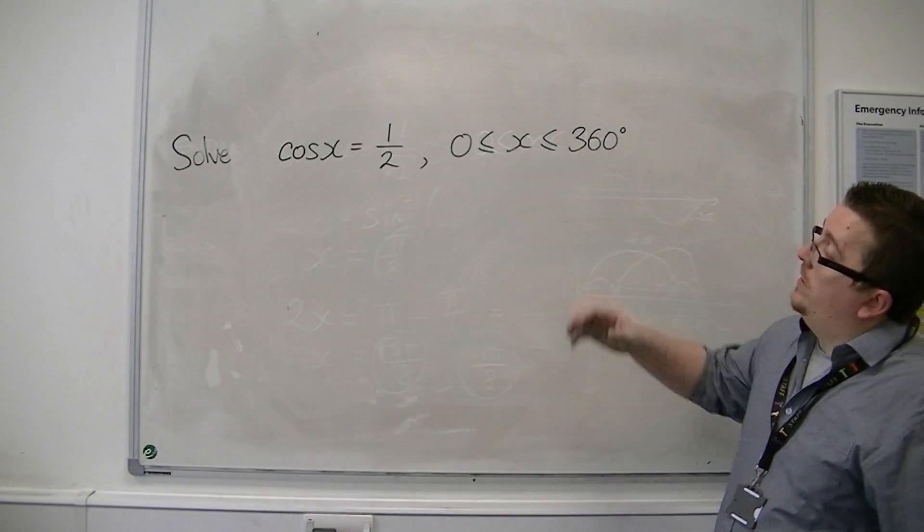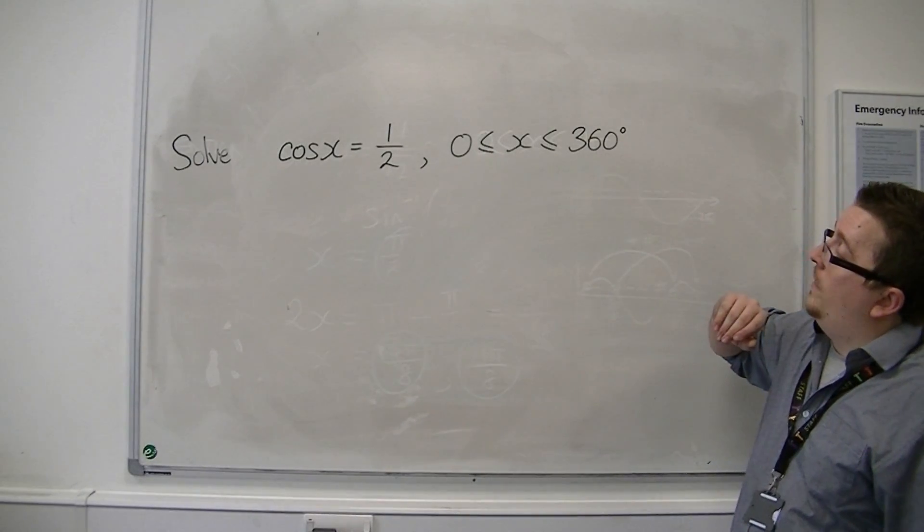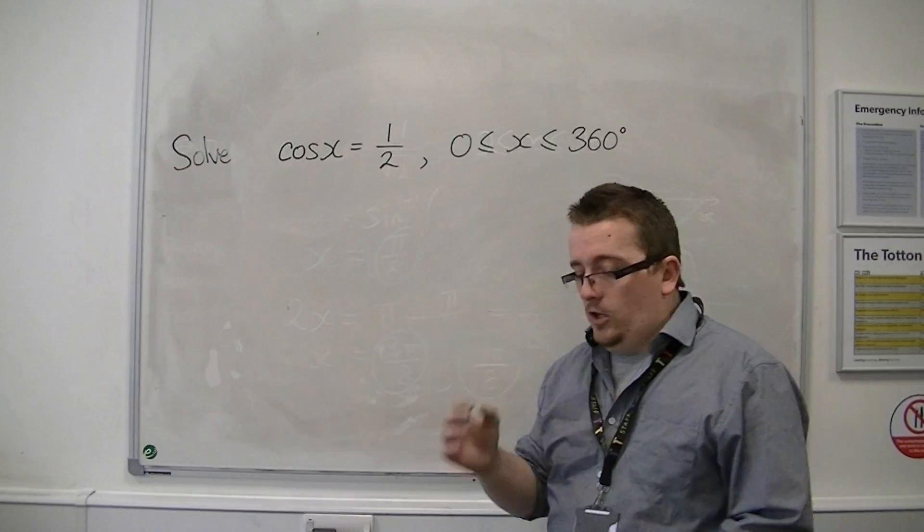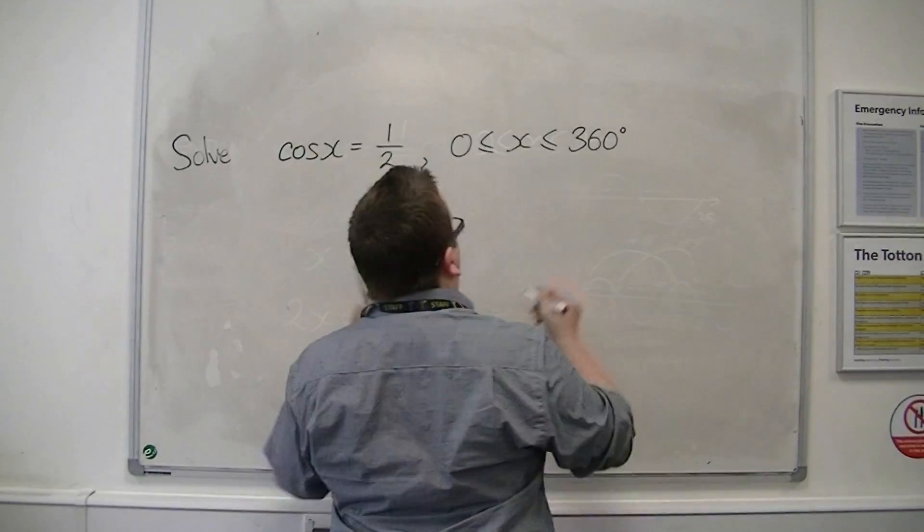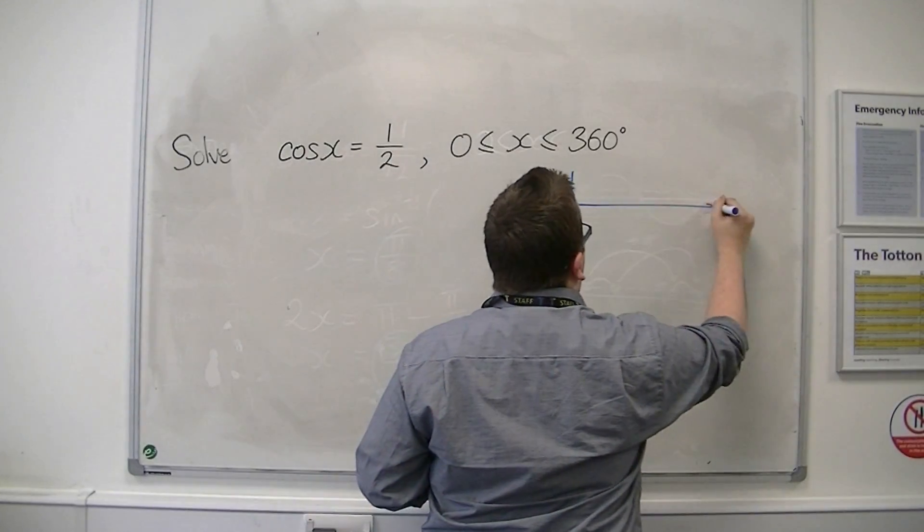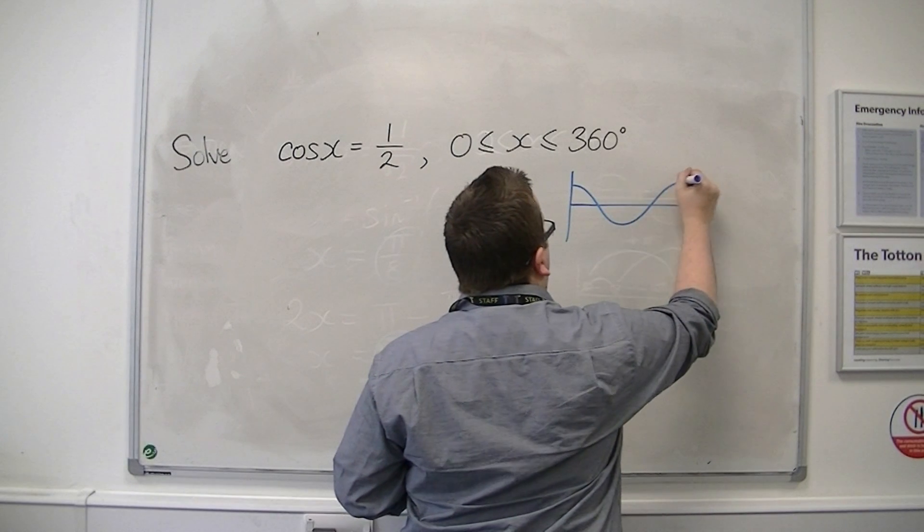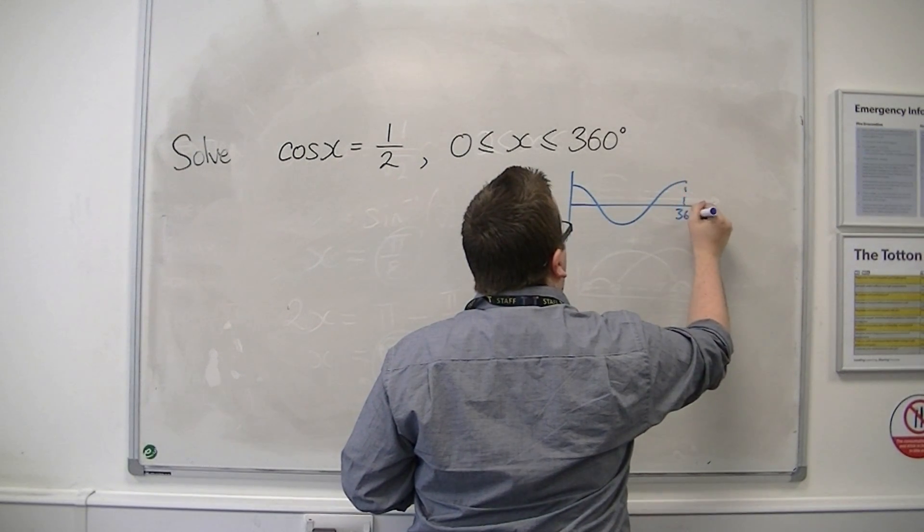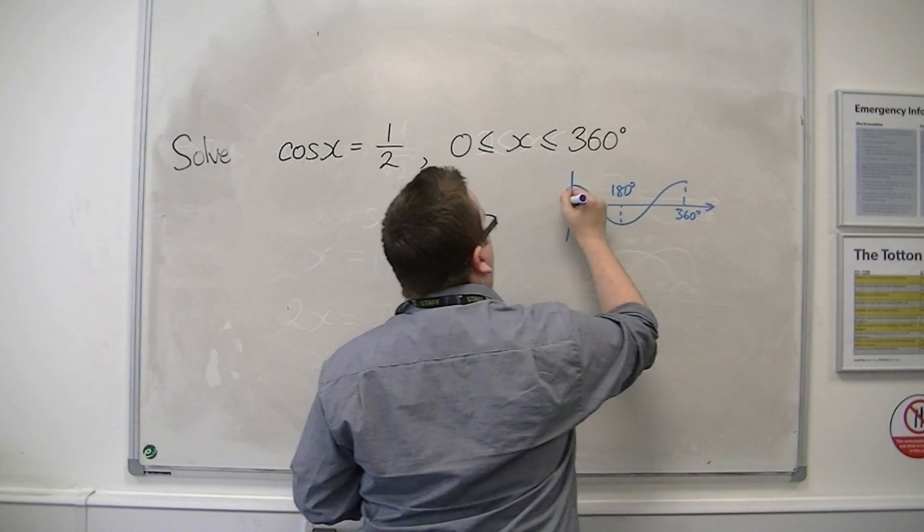First of all, we're going to solve cosine of x equals 1 half between 0 and 360. Make sure you draw a sketch of cosine in degrees. So there's 360, there's 180, there's 0.